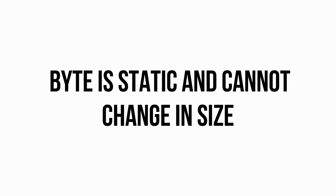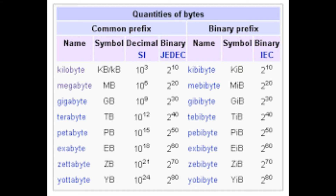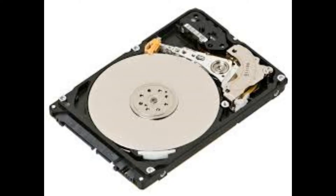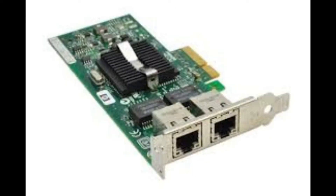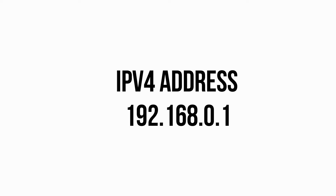There are 8 bits in a byte, and a byte is static, or in other words, does not change. Computers organize their data into bytes to increase data processing efficiency of its memory, disks, hard drives, and also network interfaces.